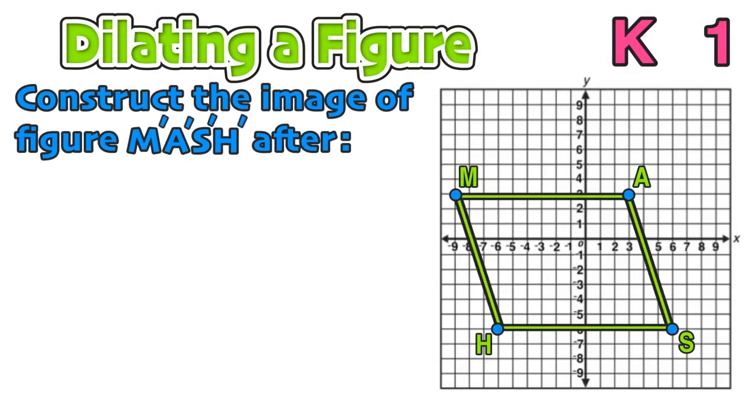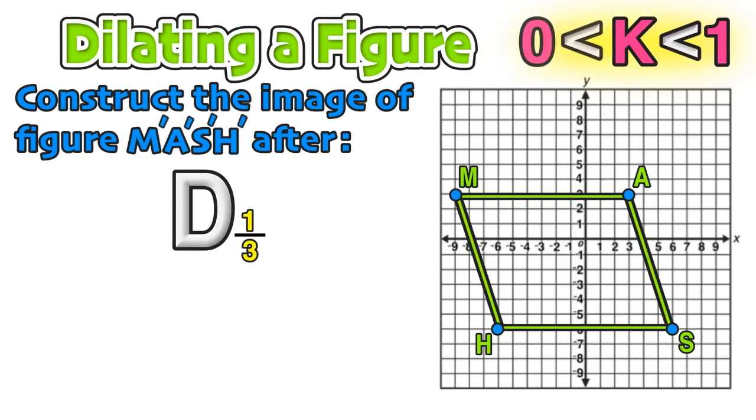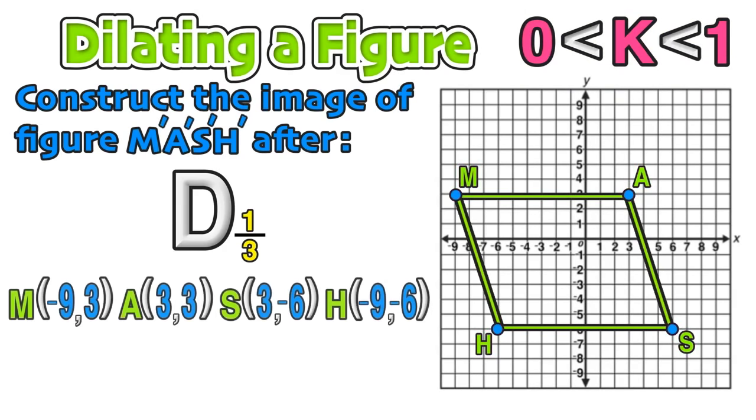For our second example, we are going to perform a dilation on a 4 sided figure. The scale factor for this figure is 1 third, and since 1 third is less than 1, we know that the image is going to be shrunk down to 1 third the size. We can start by writing down the coordinates of the vertices of M, A, S, and H. Then we'll take the scale factor of 1 third and multiply it by the x and y value in each coordinate.